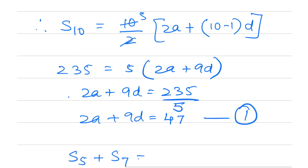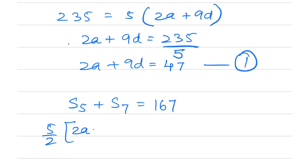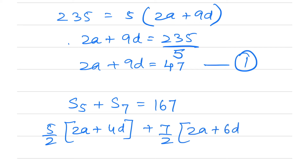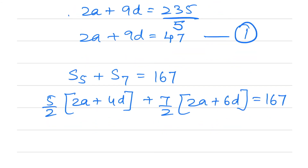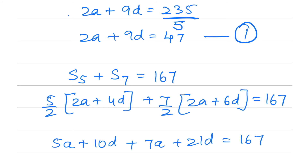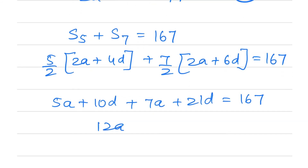For S5 + S7 = 167: (5/2)(2a + 4d) + (7/2)(2a + 6d) = 167. Simplifying: 5a + 10d + 7a + 21d = 167, giving 12a + 31d = 167. This is equation 2.